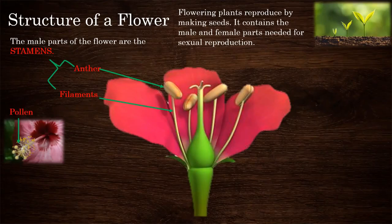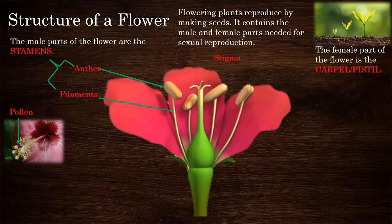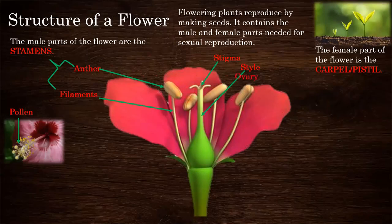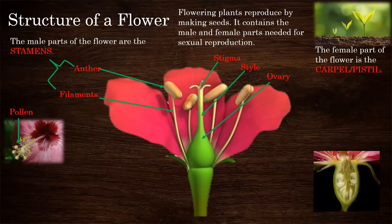The female part of the flower is the carpel or pistil. It is made up of the stigma, which is sticky to catch pollen grains, a tube leading to the ovary. This is how it looks like inside the ovary.